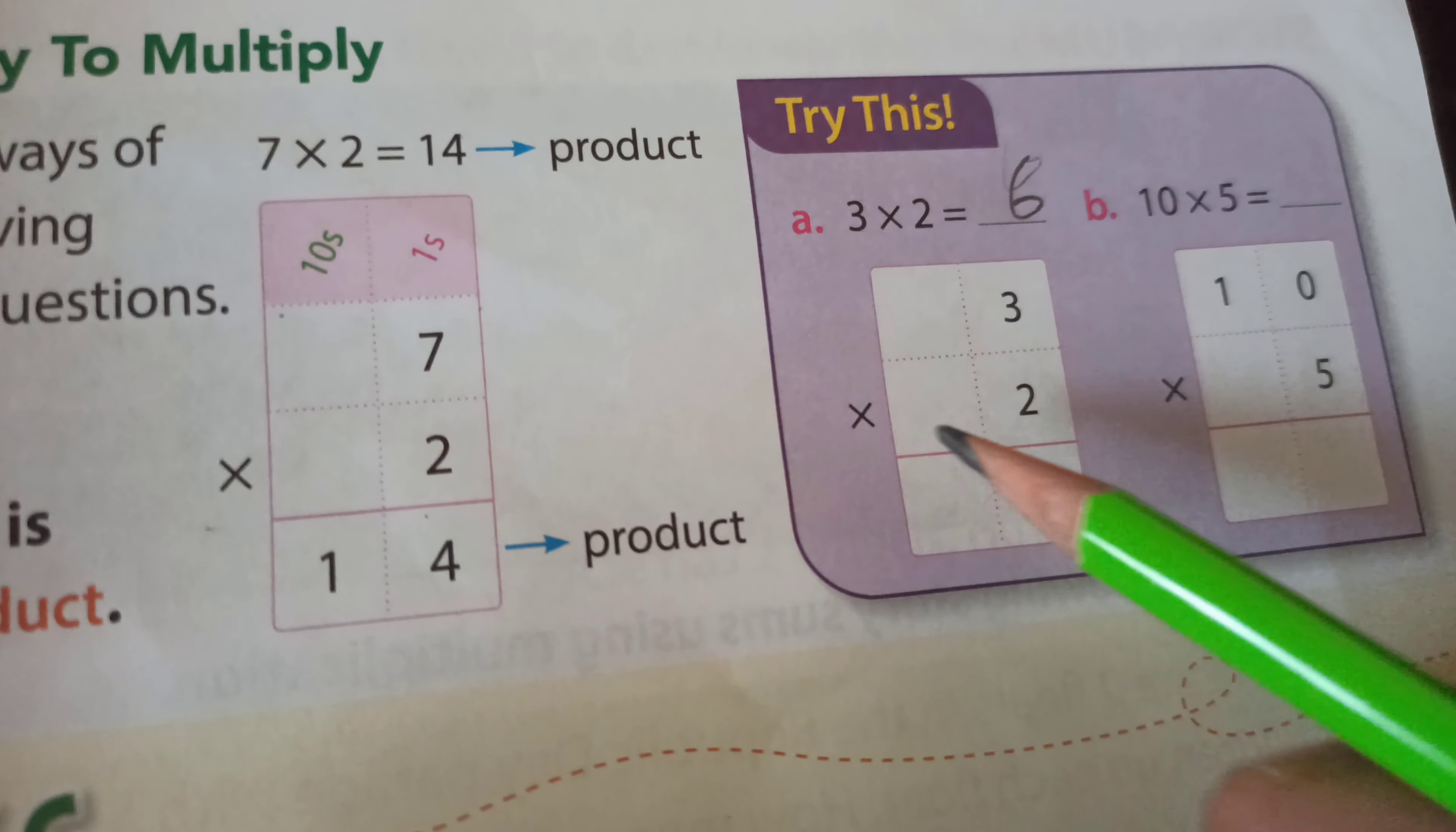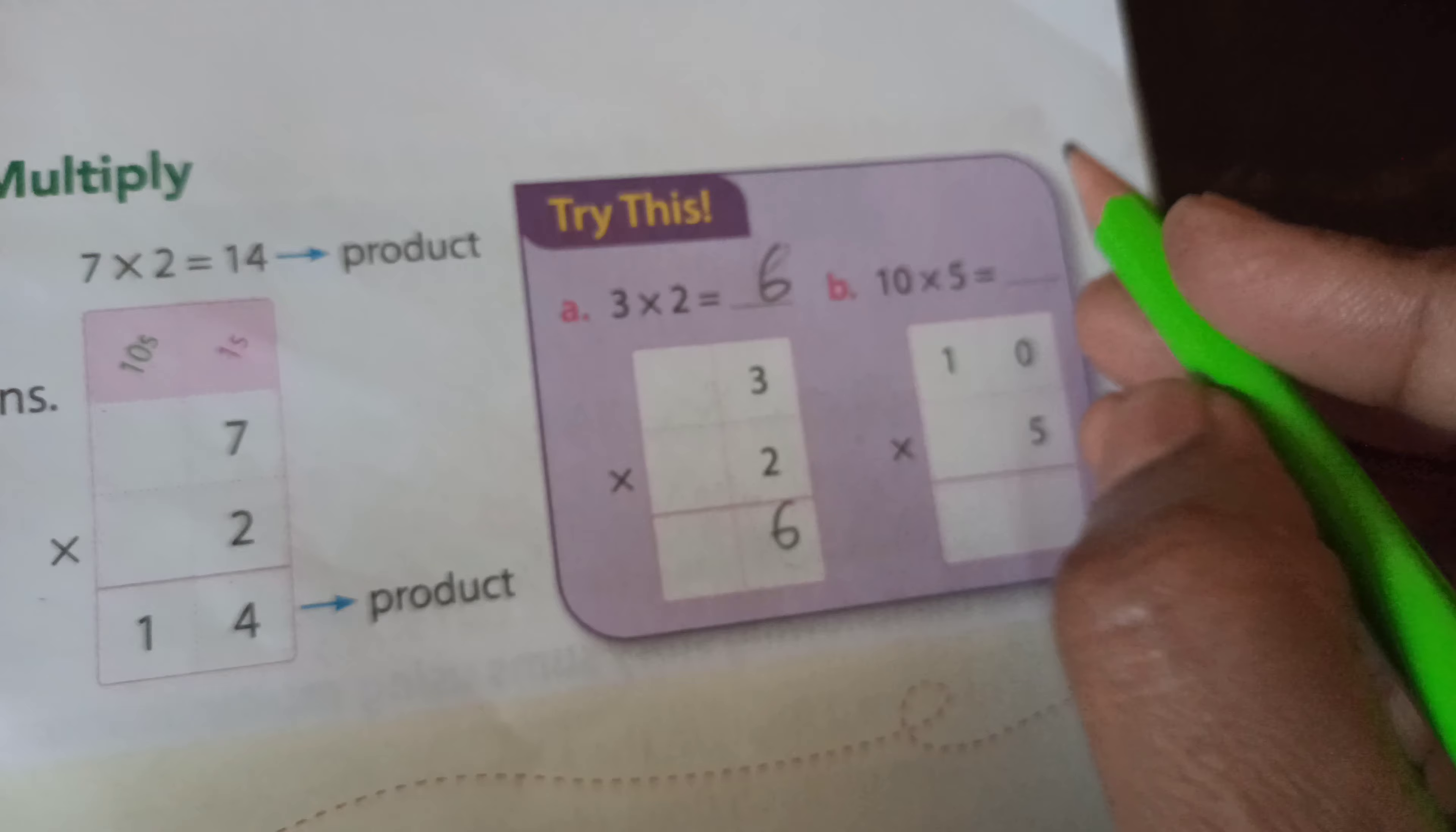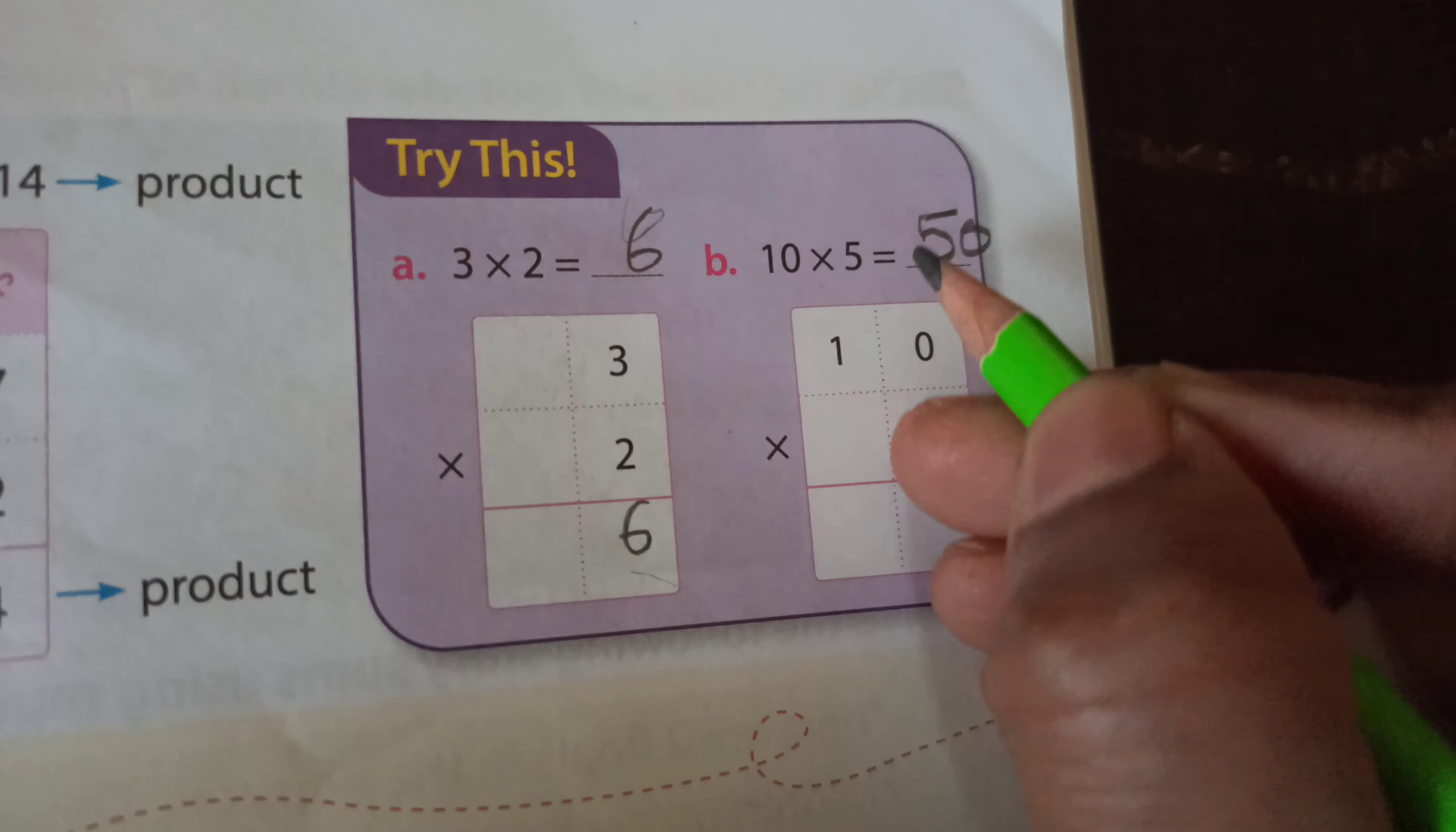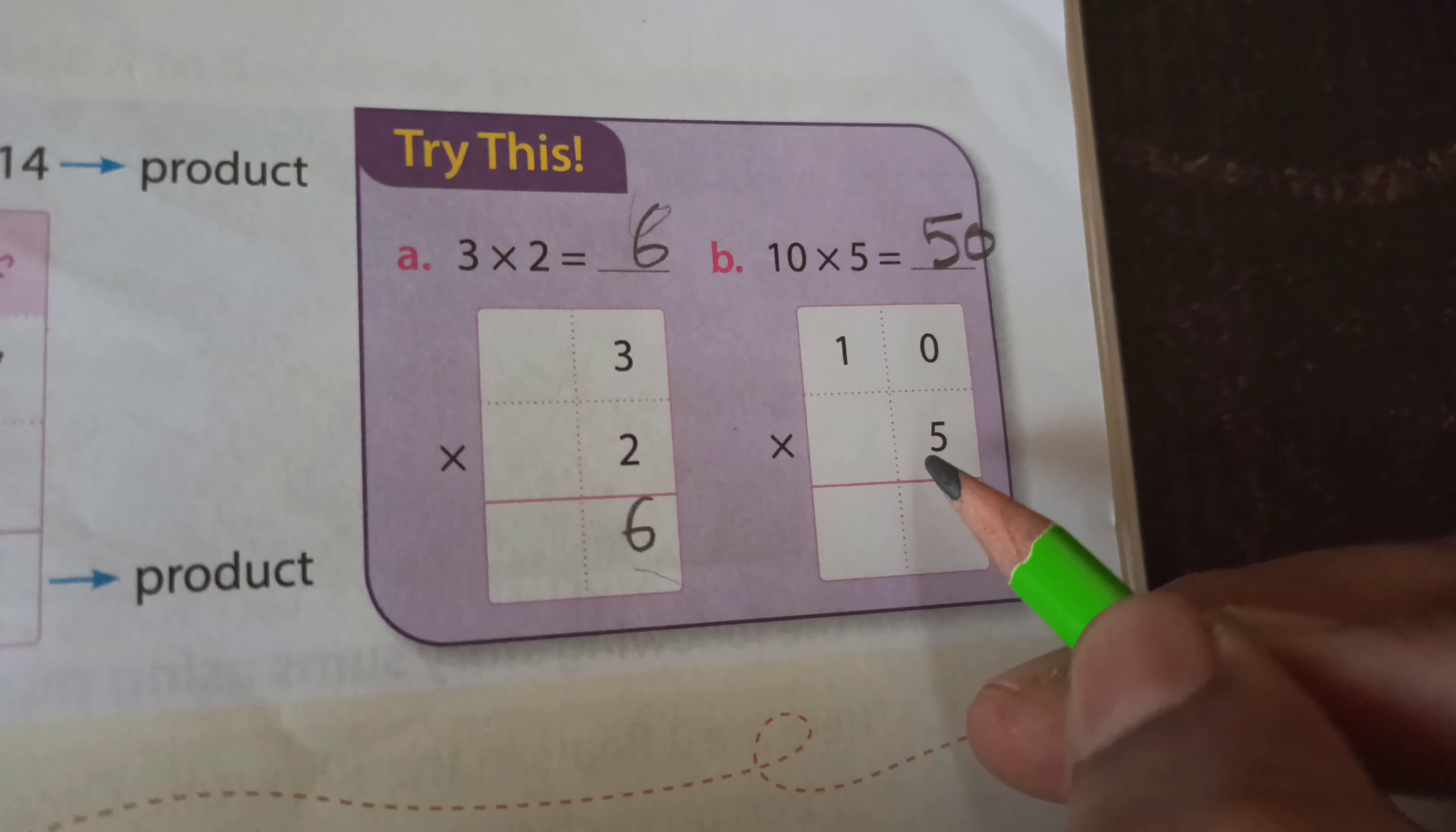See here, Try This section. 3 multiplied by 2 equals how many? 6. And in this format, 3 multiplied by 2 equals 6. 2 threes are 6. And here B number, 10 multiplied by 5 equals how many? 5 tens are 50.